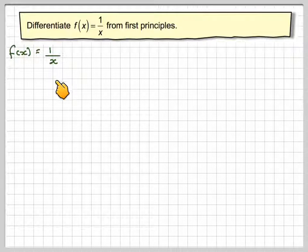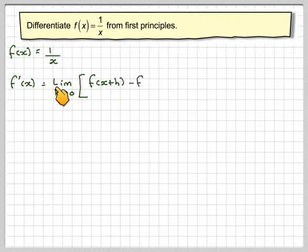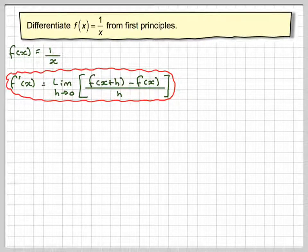So we've got f(x) = 1/x. f'(x) from first principles is the limit as h goes to 0 of [f(x+h) - f(x)]/h.